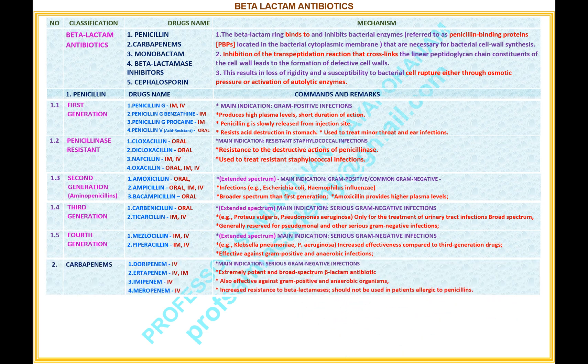Number 2 — Name of the classification: Carbapenems. Drugs under this classification: 1. Doripenem, available route: intravenous. 2. Ertapenem, available route: intravenous and intramuscular. 3. Imipenem, available route: intravenous. 4. Meropenem, available route: intravenous. Comments and remarks — main indication: serious gram-negative infections. Extremely potent and broad-spectrum beta-lactam antibiotic; also effective against gram-positive and anaerobic organisms. Increased resistance to beta-lactamases. Should not be used in patients allergic to penicillins.